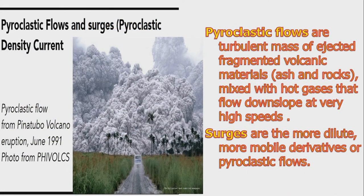Next are pyroclastic flows and surges, also called pyroclastic density currents. This photo is from the eruption of Pinatubo volcano. Pyroclastic flows are turbulent masses of ejected fragmented volcanic materials — such as ash and rocks mixed with hot gases — that flow downslope at very high speed.